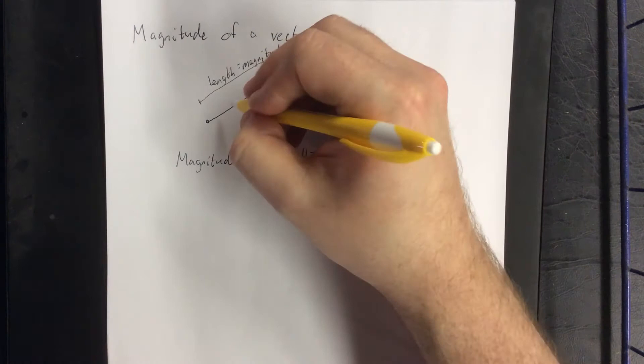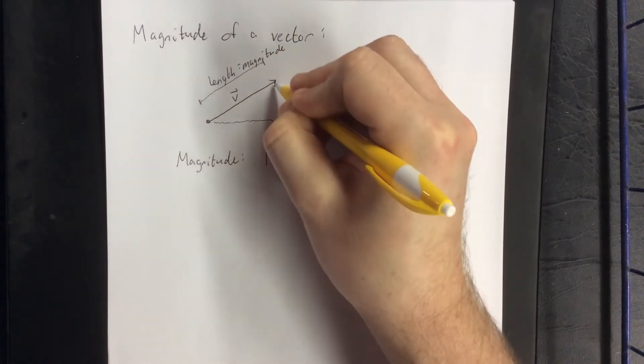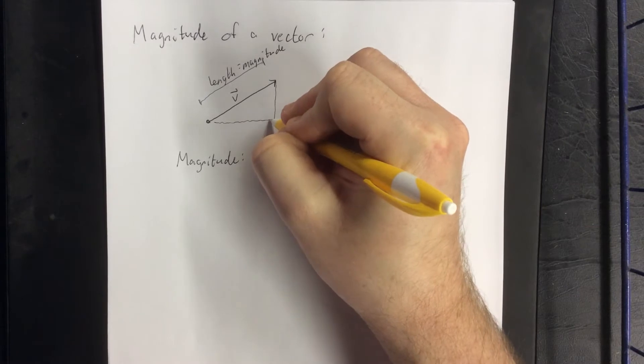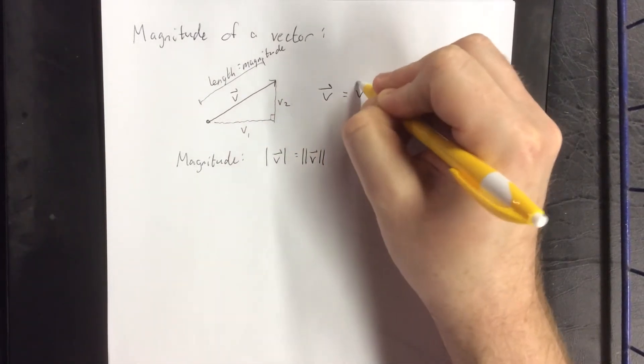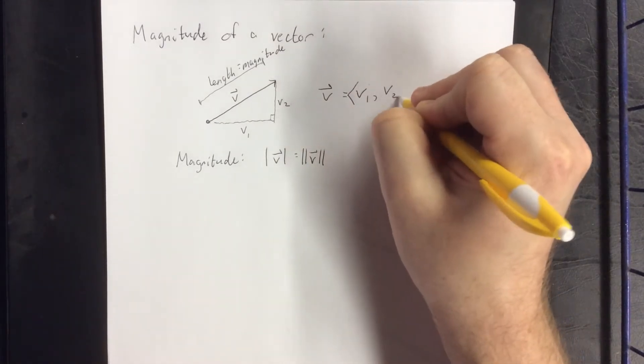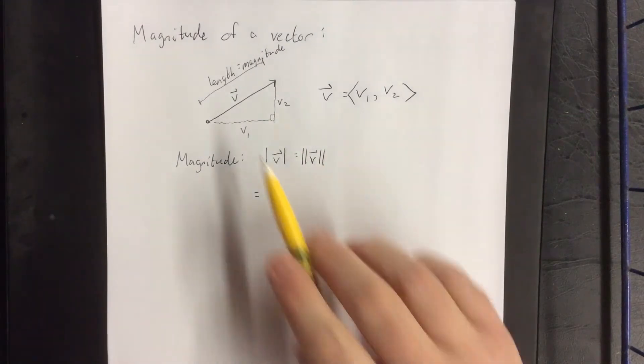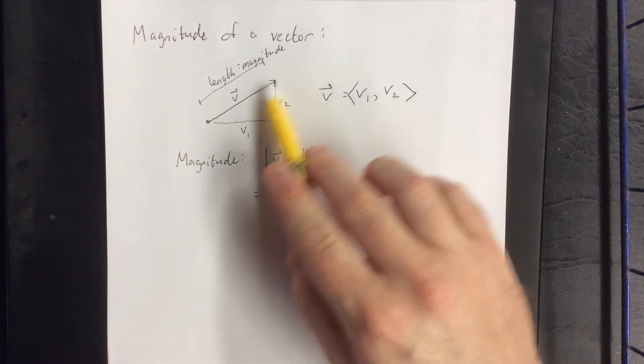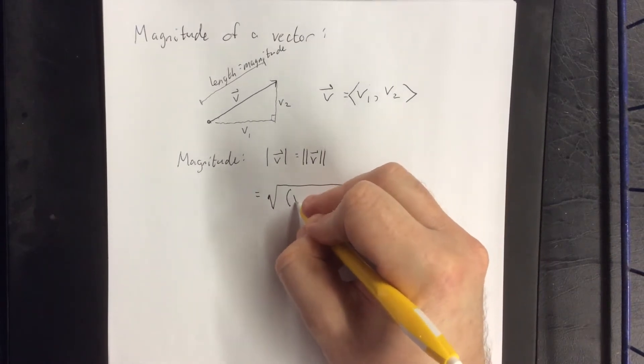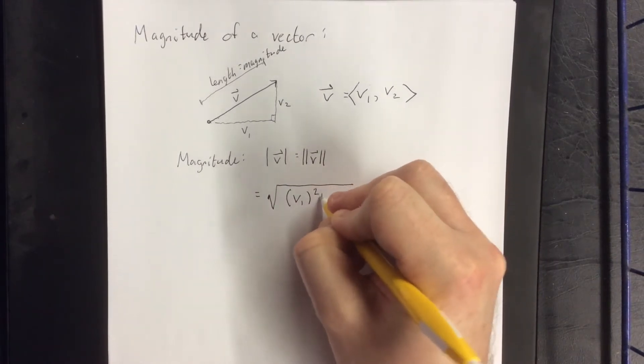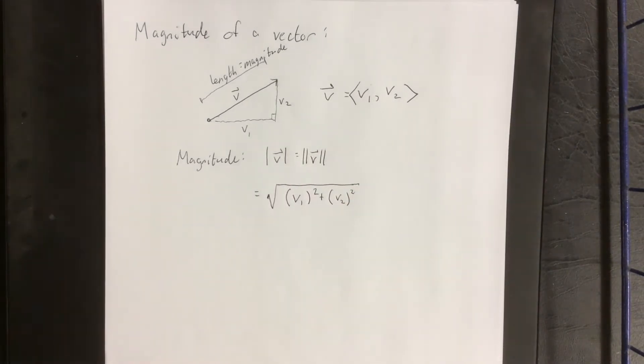Now suppose we have a vector v that we can break down into horizontal and vertical components v1 and v2. Vector v equals (v1, v2). The magnitude of a vector is obtained using the Pythagorean theorem: square each component, add them together, and that gives you the length of the hypotenuse.